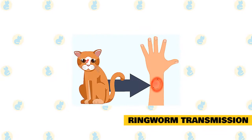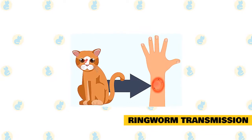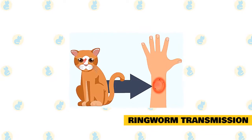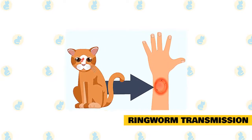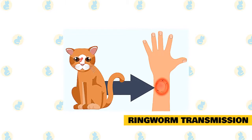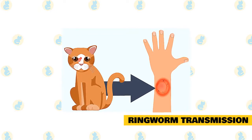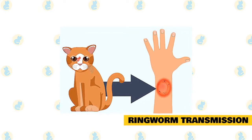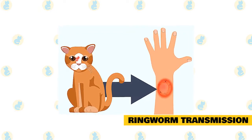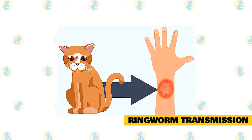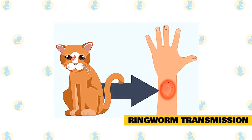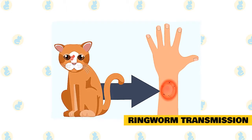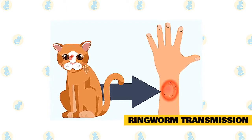Ringworm Transmission. Ringworm is contagious and transmission occurs by direct contact with the fungus. It may be passed by direct contact with an infected animal or person, or by handling contaminated objects, or by touching contaminated surfaces.